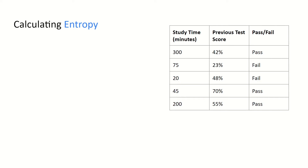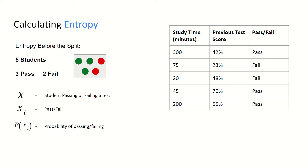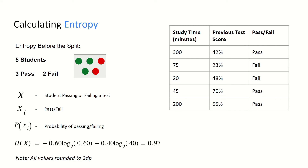So let's now go through an example of calculating entropy using our student data. We can look at the entropy before the split. In this case we have five students — three people that pass and two people that fail. Our big X, which is a random variable or random process, is a student passing or failing a test. XI are the possible outcomes, which in this case is either pass or fail, and P(XI) is the probability of passing or failing. Applying this formula, the probability of passing is 0.6 (or 3 over 5) and the probability of failing is 0.4. So the entropy of our data before performing any splits is 0.97.